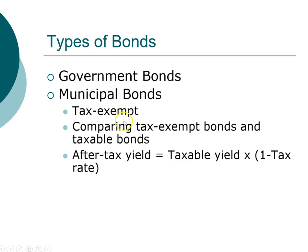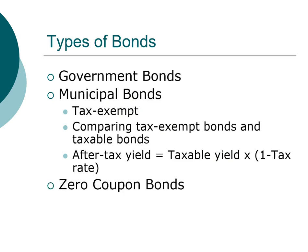Municipal bonds are tax-exempt, meaning the interest income is not subject to federal or state tax. That's important because as an investor it's your after-tax return that you can take home. When comparing a taxable bond and a tax-exempt bond, you want to compare their after-tax yield. The after-tax yield equals the before-tax yield times one minus the tax rate. As a result, a corporate bond will have to offer a higher return in order to compete with municipal bonds.